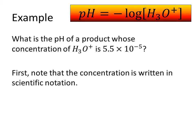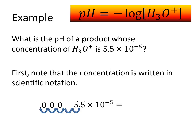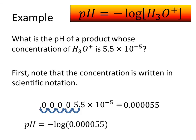First, note that the concentration here is written in scientific notation, so what we need to do is write this first as a decimal. 5.5 times 10 to the negative 5 — in order to write that as a decimal, we look at the exponent, which tells us how many times we need to move our decimal place to the left. Being negative tells us we're moving our decimal to the left 5 times, and in all the spaces in between we fill those in with zeros. So 5.5 times 10 to the negative 5 equals 0.000055. Plugging this into our formula, we get that the pH equals the negative log of 0.000055, which equals approximately 4.2596. So we would say that this product has a pH of around 4.3.